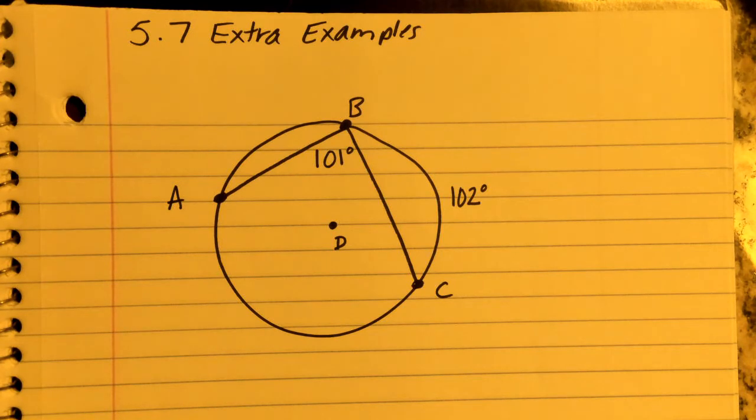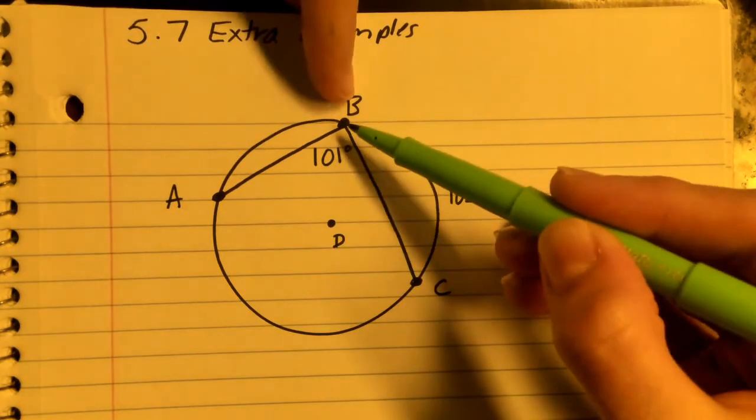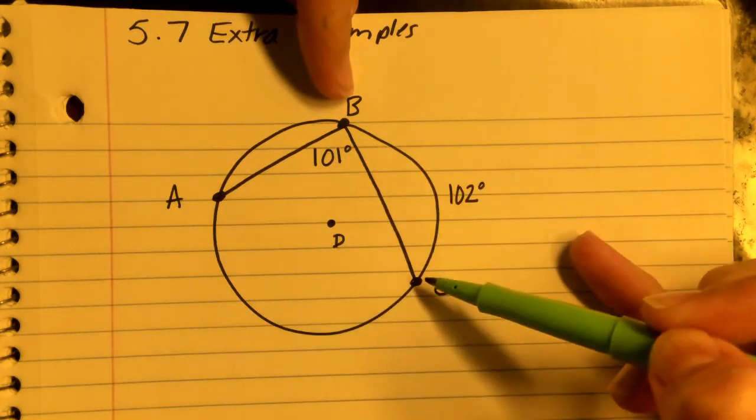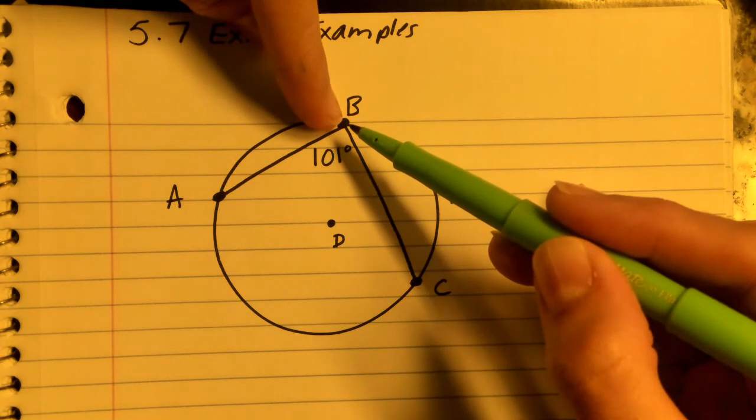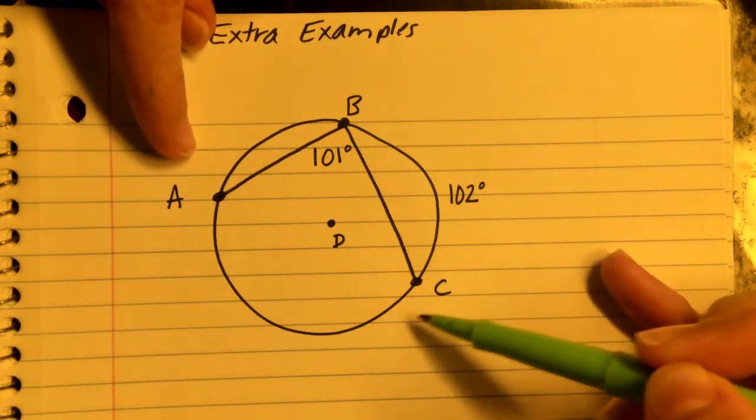Let's say you have a problem like this where you have the center of your circle. Angle ABC is our inscribed angle because it's going to the vertex that's on the circumference and it opens up to an opposite arc.